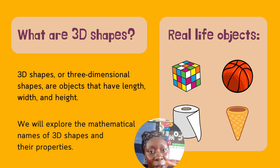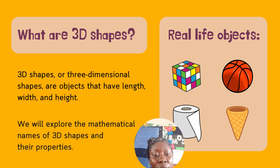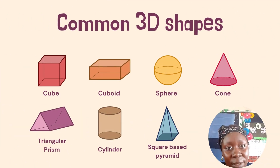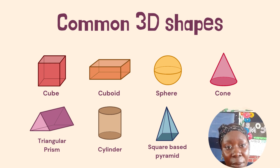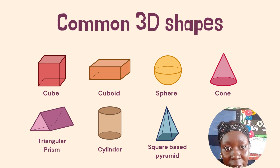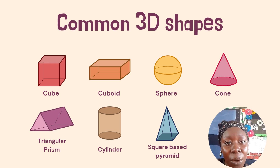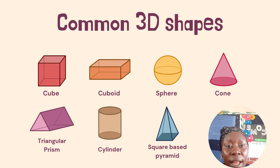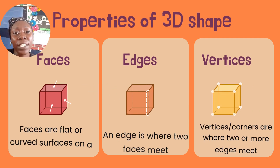In real life, you can see objects like a cube, a ball, and a tissue roll. The 3D shapes we'll cover are: cube, cuboid, sphere, cone, triangular prism, cylinder, and square-based pyramid.